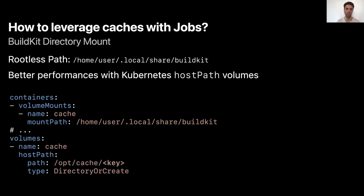Once you have the key, you need to know how to mount the corresponding cache into the job. If you use rootless BuildKit — and you should — you'll have to mount the cache at the path: /home/user/.local/share/buildkit. You'll also notice better performance with hostPath volumes rather than distributed or remote volume storage. You might also want to use local volumes, but because they don't support dynamic provisioning, depending on your setup it might not work well. This example shows how to mount a hostPath volume at the BuildKit rootless path using the specific key we defined.